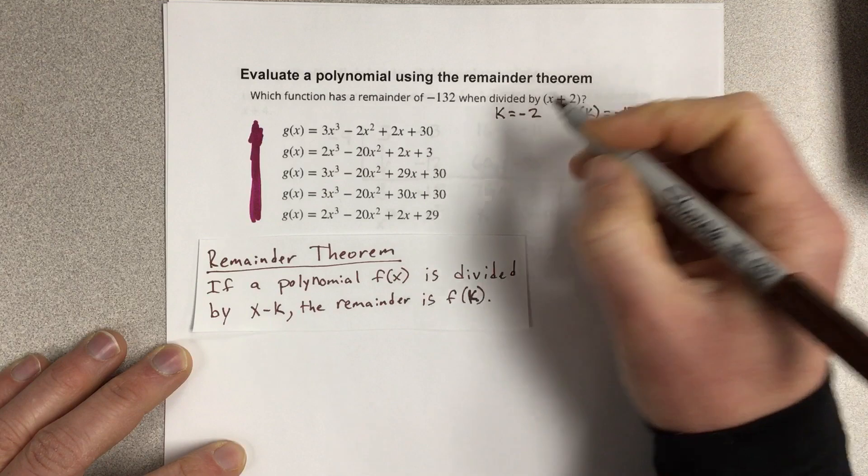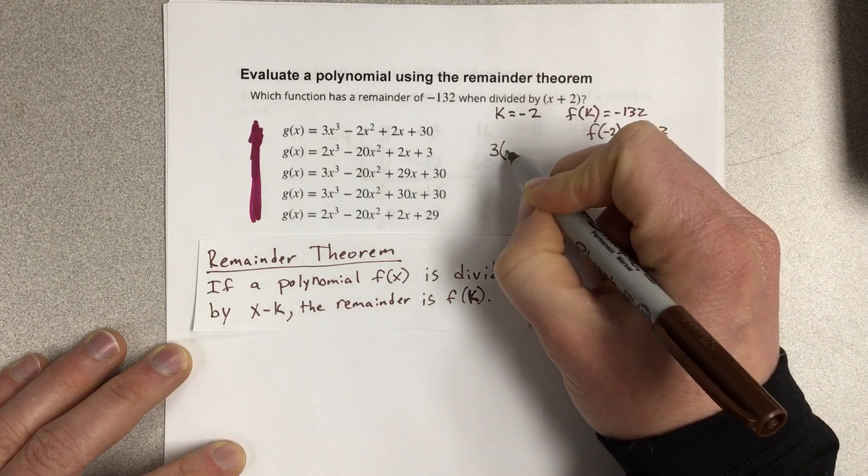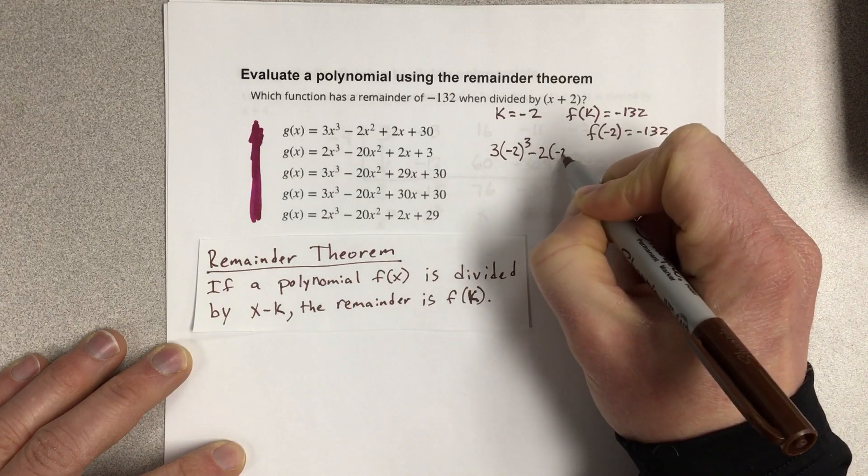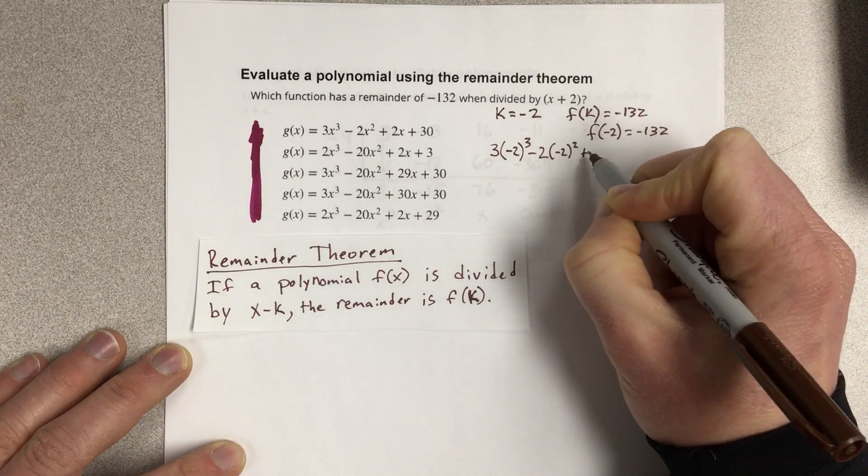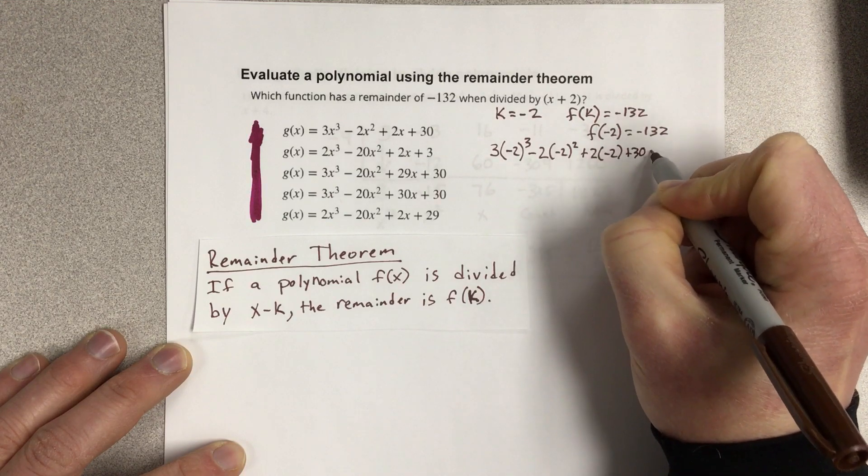So, I'm going to take the first one, which would be 3 negative 2 cubed minus 2 times negative 2 squared plus 2 times negative 2 plus 30, and I'm going to see what it equals.